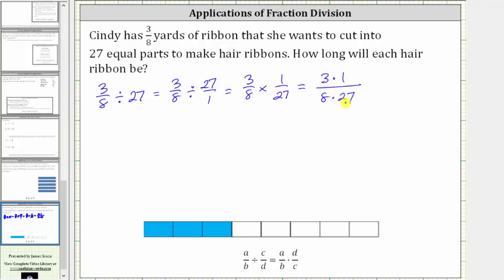There are a couple ways of showing this. If we recognize that 3 and 27 share a common factor of 3, we can simplify the 3 to 1, because there's one 3 in 3. And we can simplify the 27 to 9, because there are nine 3s in 27.